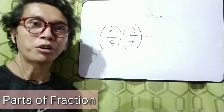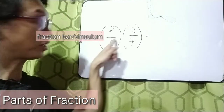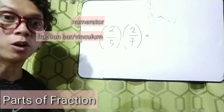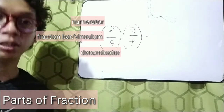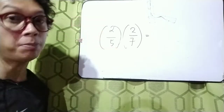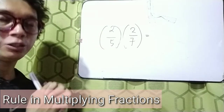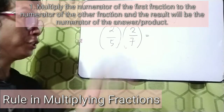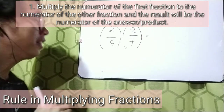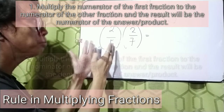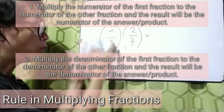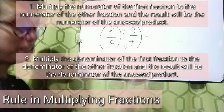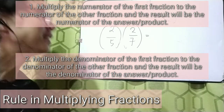First, let us recall the parts of a fraction. We have the fraction bar which is called the vinculum. The number above the vinculum is what we call the numerator, and the number below the vinculum is what we call the denominator. In multiplying fractions, the rule is we multiply the numerator of one fraction to the other numerator and write the result as the numerator. Then we multiply the denominator of one fraction to the denominator of the other fraction, and the result will be the denominator of the answer. So let's try this.